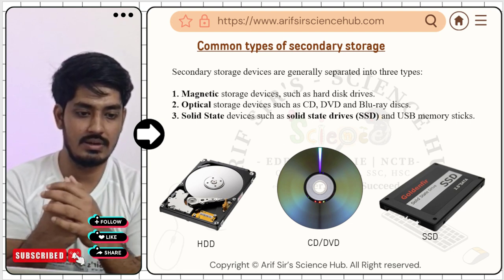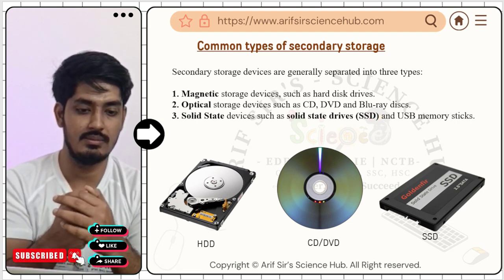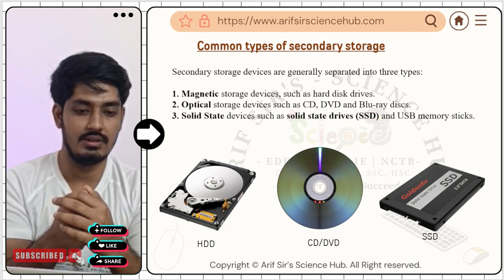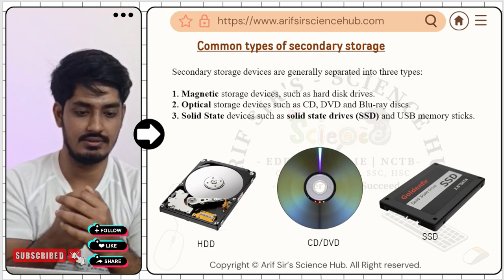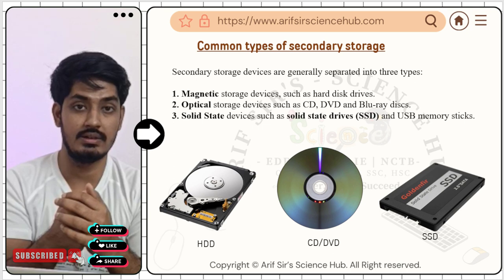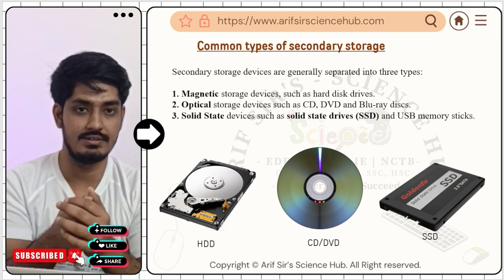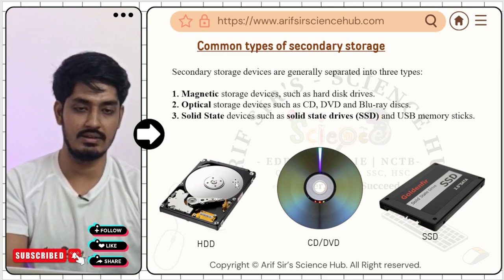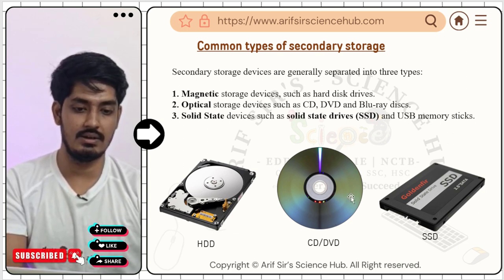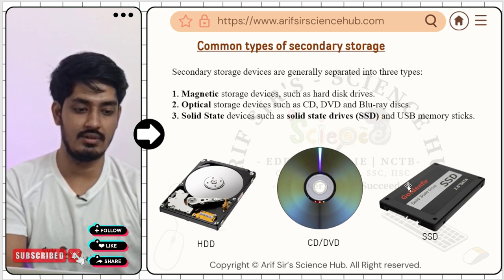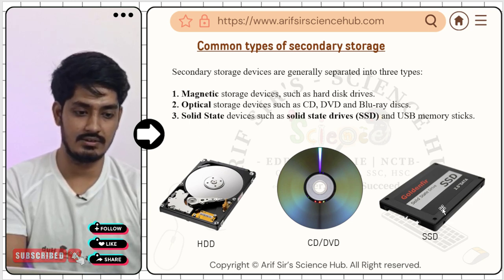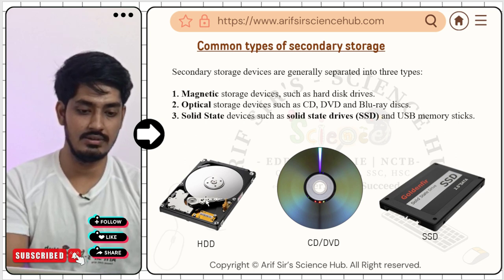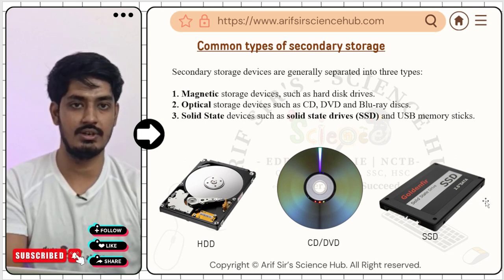There are three common types of secondary storage: magnetic storage, optical storage, and electrical storage. The hard disk drive is an example of magnetic storage, the CD and DVD are optical secondary storage, and the SSD (solid state drive) is electrical secondary storage. All these types store data permanently.